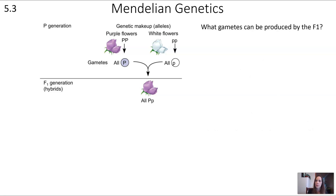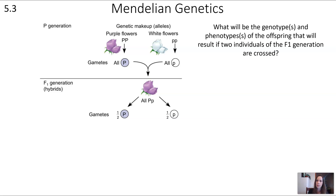Now let's focus on the F1 generation further and figure out what gametes that plant can produce. Because this individual has the Pp genotype — and in fact all individuals of this generation do — those individuals can produce two different gametes: one with big P and one with little p. We can use that information to figure out the offspring if we crossed two F1 individuals to get the F2 generation.